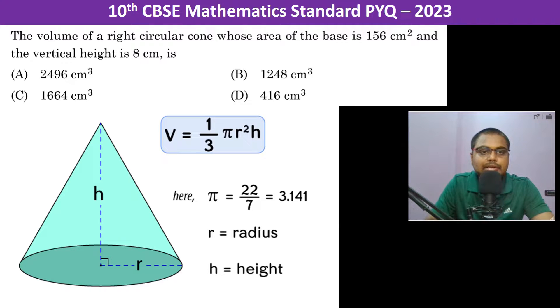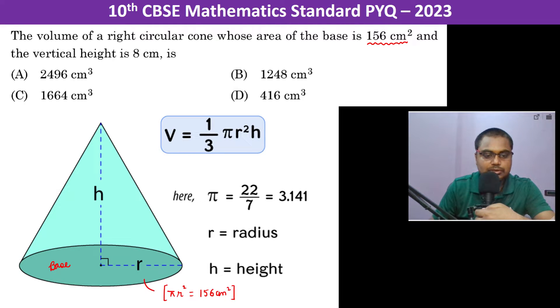The volume of a right circular cone whose area of the base is 156 centimeters square. Okay, so this is the base, and this is the base. That means pi r square is equal to 156 centimeters square.